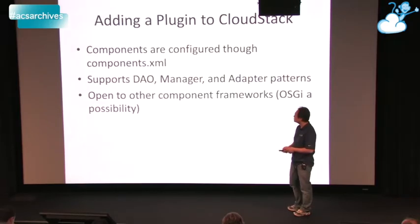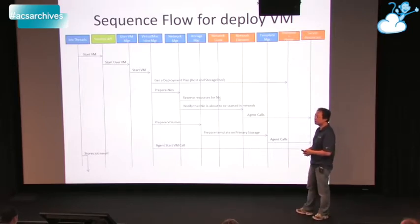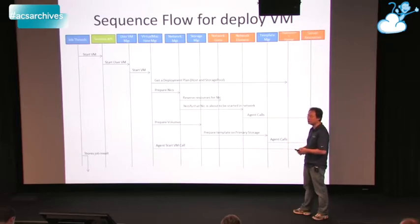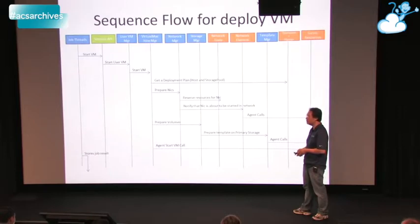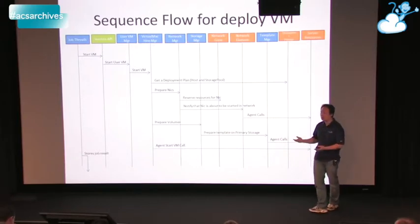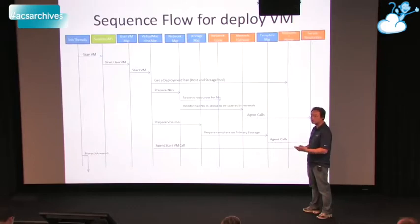Question: What is the latency from the Deploy VM request to the time the actual VM gets deployed — is it seconds or minutes? Answer: If running with a simulator, it would take seconds. If talking with a physical resource, it really depends on the resource itself. For example, to start a VM on XenServer takes maybe 10 to 15 seconds. With VMware it might take a little bit longer. It also depends on the work that needs to be done — for example, if we need to copy the template onto the primary storage for the very first time, that can take minutes. If it's a 10 gig template, it depends on your network speed before it finishes.